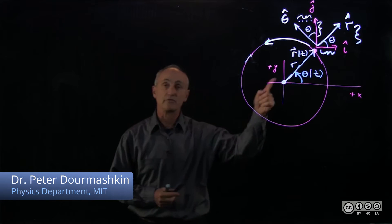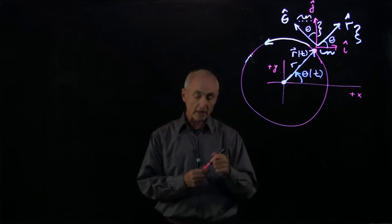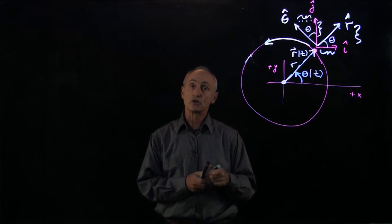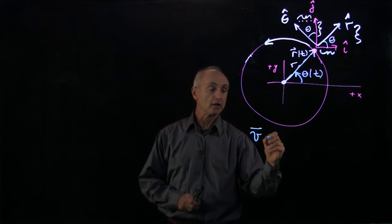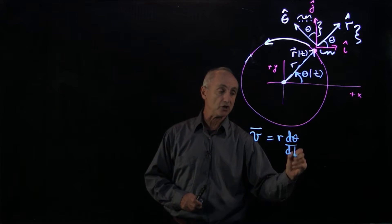When we analyzed how the position vector changed, we know that the velocity for circular motion is given by the radius times the rate that the angle is changing.